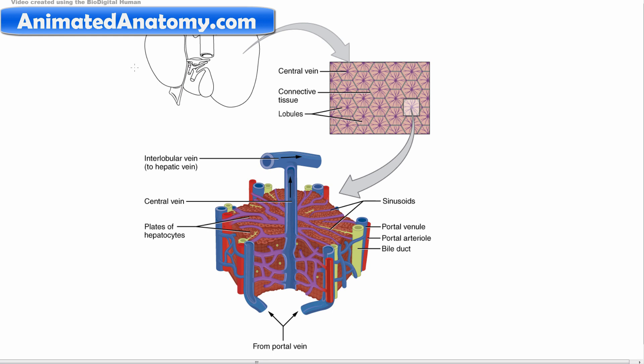Microscopically, each liver lobe is seen to be made up of hepatic lobules. The lobules are roughly hexagonal and consist of plates of hepatocytes radiating from a central vein. Here we see the central vein and here we see the plates of hepatocytes radiating from it.